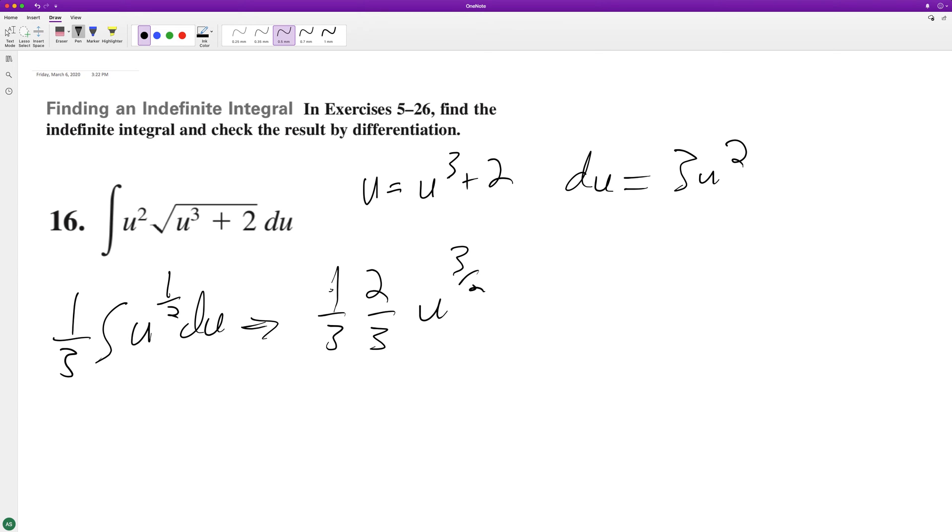2 over 9, plus C. So 2/9 sub back in for u: u cubed plus 2 raised to the 3/2 plus C, and that's it. I hope this helped you out. I appreciate you watching the video.